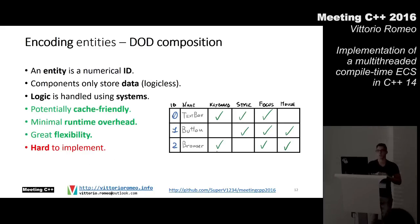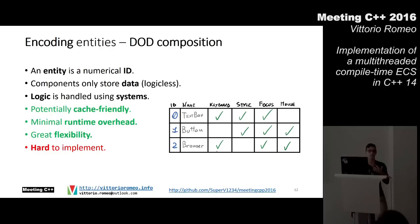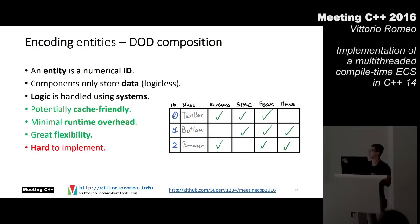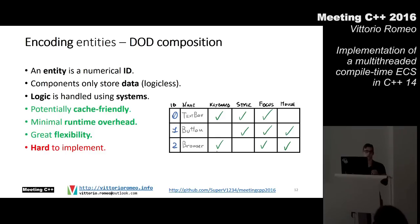The approach I use in this library — probably the best for ECS — is a data-oriented approach. Data-oriented means trying to leverage the cache as much as possible and designing code around the data. In this case an entity is just a numerical ID, components only store data and are logic-less, and logic is handled by a new piece of the equation: a system. This is potentially cache-friendly because we can store all components of the same type in a single array, with minimal runtime overhead since we don't need virtual dispatch or runtime indirection.